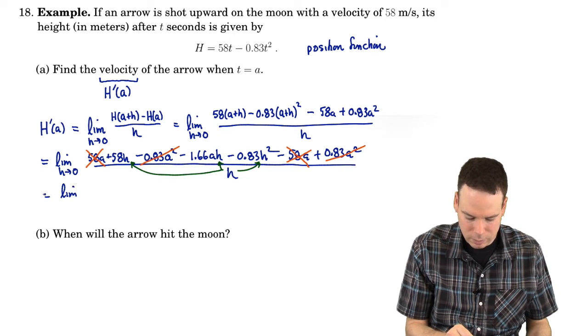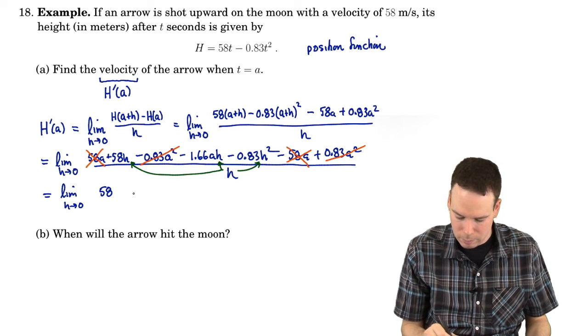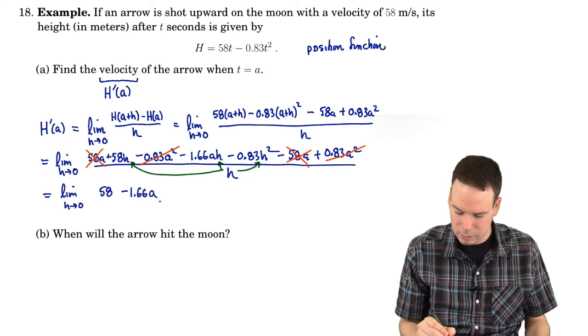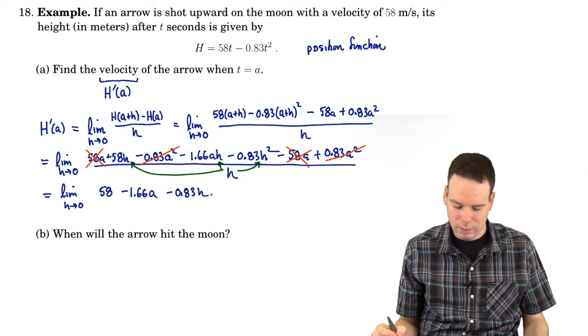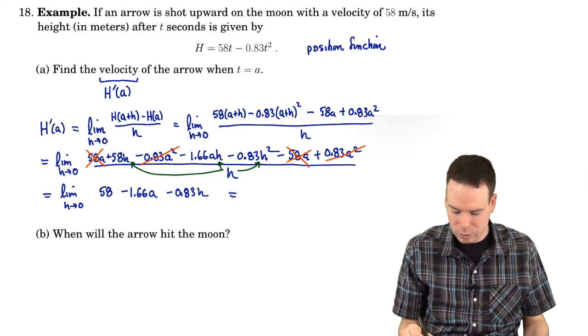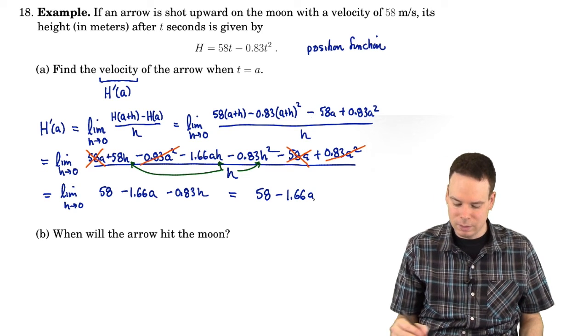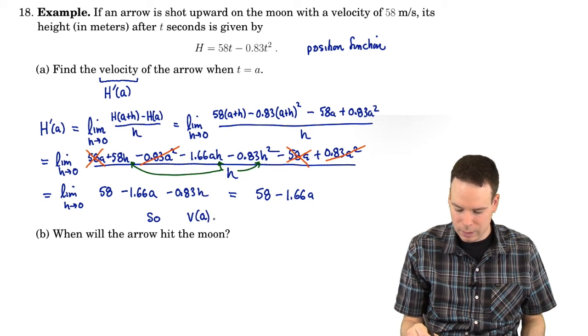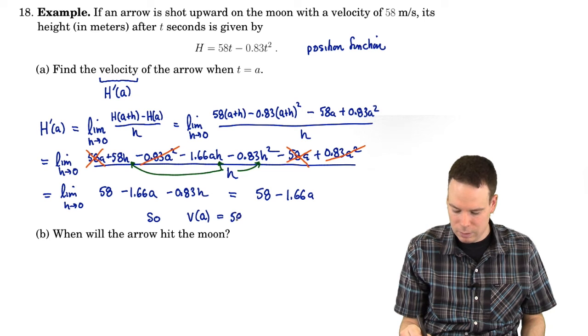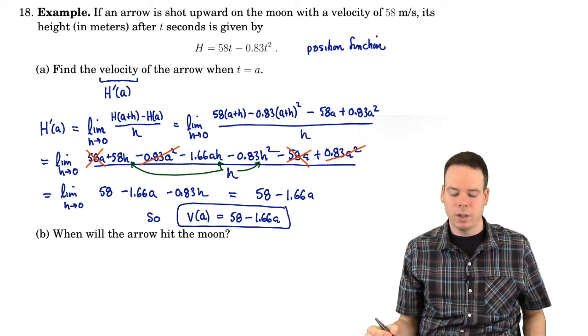And I get the limit as h goes to 0, 58 minus 1.66a minus 0.83h. As h goes to 0, the last term goes to 0. The other two terms survive and so we're left with a limit of 58 minus 1.66a. So the velocity at a is 58 minus 1.66a. We found our velocity function.